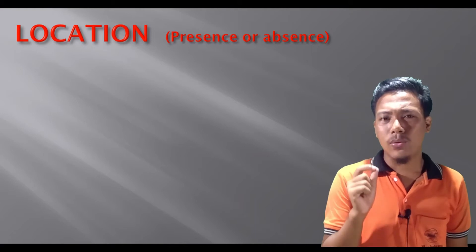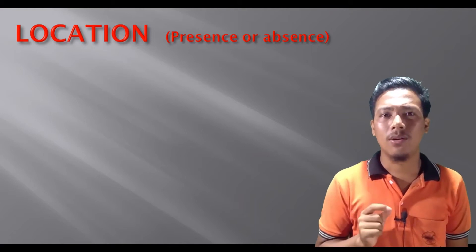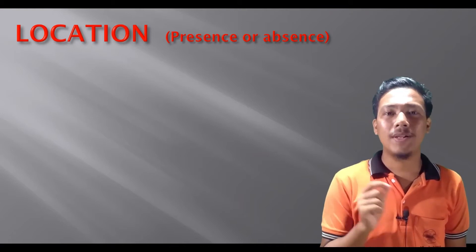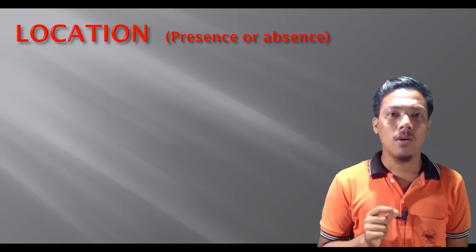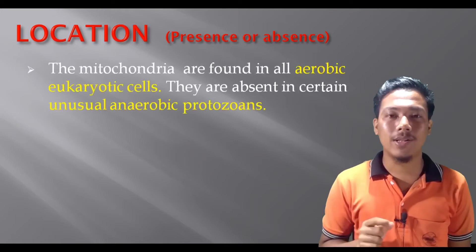This mitochondria has a membrane. There are prokaryotic cells, but there are all types of eukaryotic cells — aerobic eukaryotic cells.